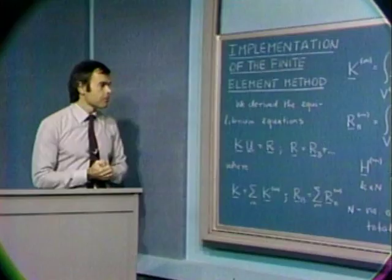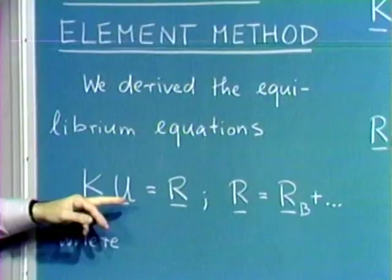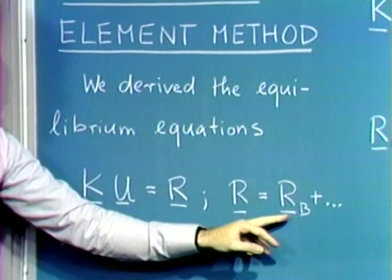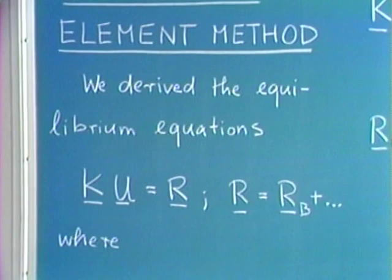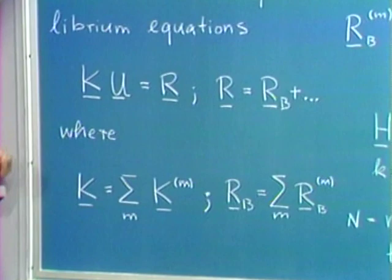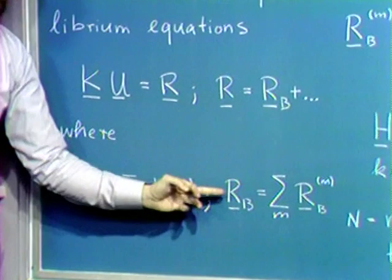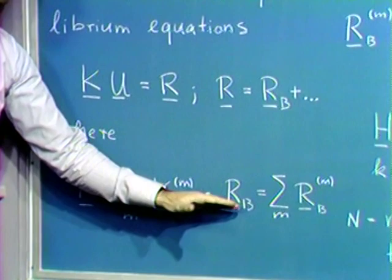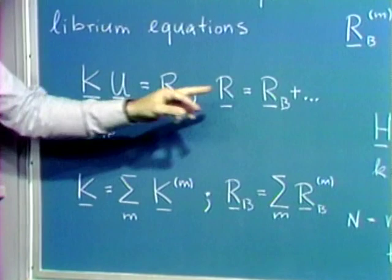We derived the equilibrium equations Ku equals R in the earlier lectures, where R contains various contributions due to body loads, surface loads, and so on. The total structure stiffness matrix is obtained by summing the element stiffness matrices, as schematically shown here. This we refer to as the direct stiffness procedure, which is also applicable to the load contributions, where we sum the element load contributions into a total nodal point load vector R.